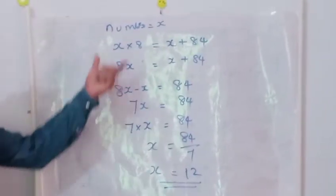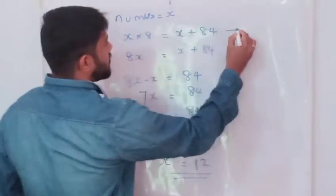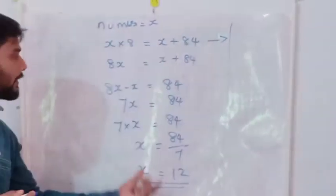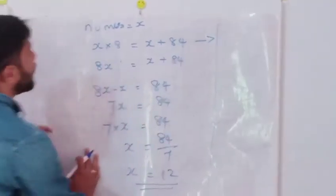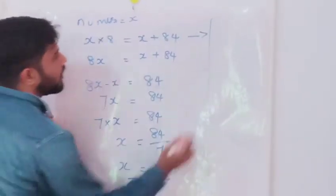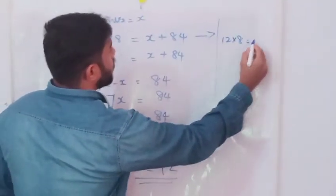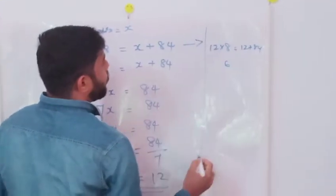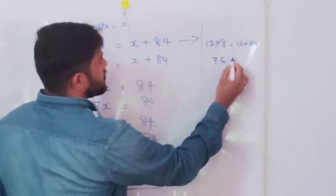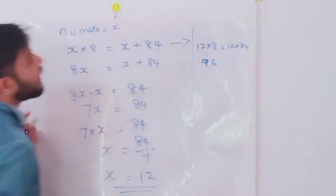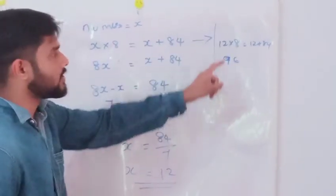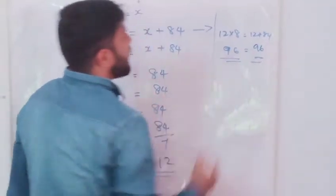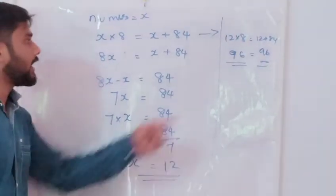We can apply this value back into the equation to verify. According to the question, that number into 8 equals that number plus 84. So x is 12: 12 into 8 equals 12 plus 84. We check: 12 times 8 equals 96. And 12 plus 84 also equals 96. So the left-hand side and right-hand side are equal. Therefore, the x value is 12.